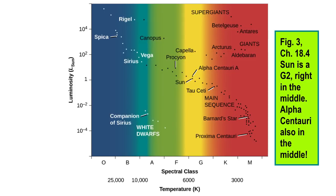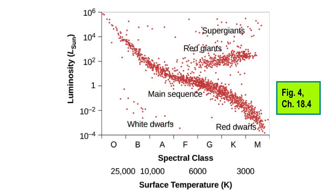Betelgeuse is way up here. Here's figure four from 18.4 — more idealized but with spectral class and surface temperature across the bottom. This one is also counterintuitive: high temperature is on the left, low temperature is on the right. Way up here at 10^6 solar luminosities, there are a few stars that are a million times more luminous than the Sun.